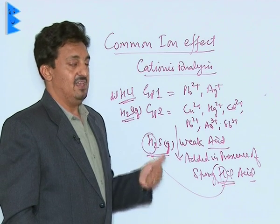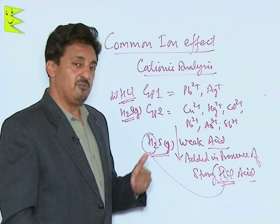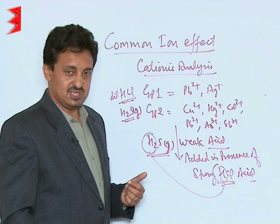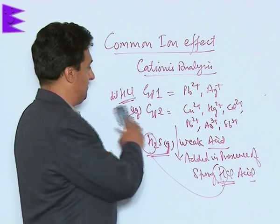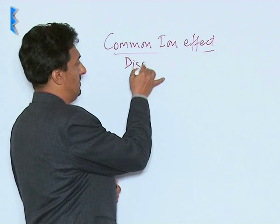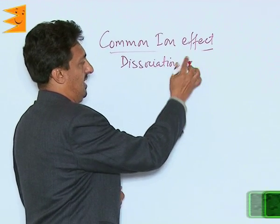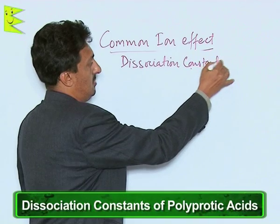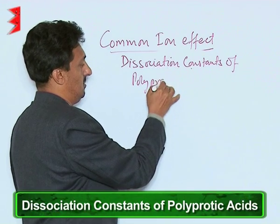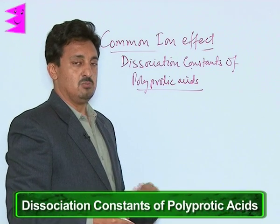The common ion effect is especially discussed here to explain the dissociation of polyprotic acids or polyprotic bases, which give more than one OH⁻ or H⁺ ion. Let us discuss the dissociation constants of polyprotic acids — polyprotic meaning they give more than one H⁺ ion.